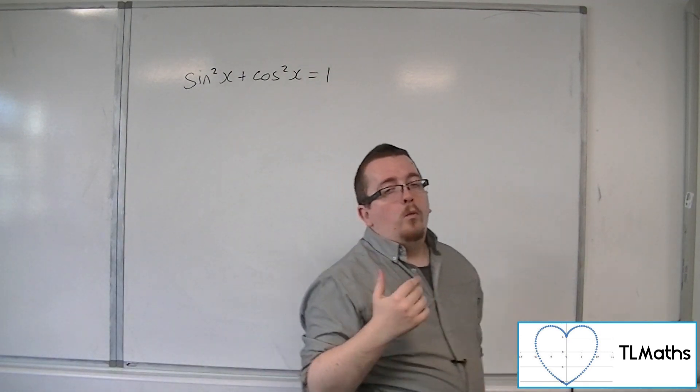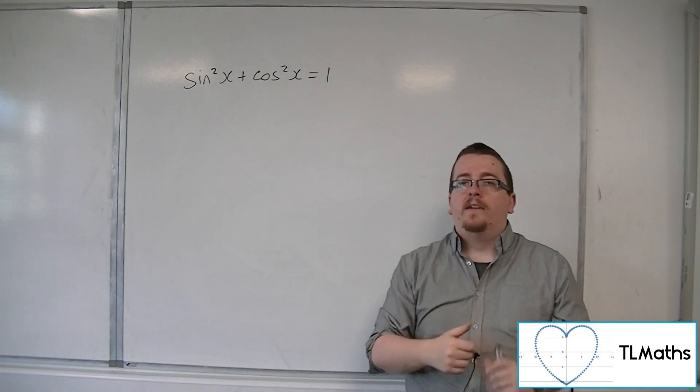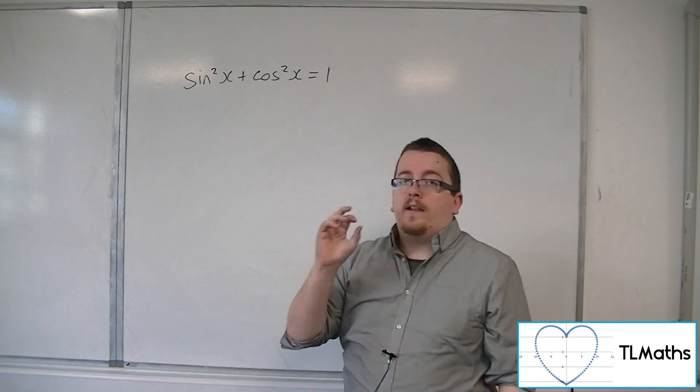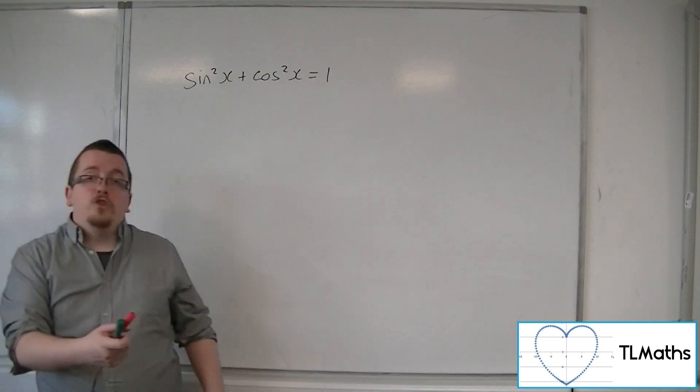Now, what we're going to do is build two new trigonometric identities that involve cosec, sec and cot. And these are just as useful.